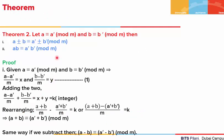Let us look at the second theorem. It states that if a is congruent to a' mod of m and b is congruent to b' mod of m, then if we add or subtract the left-hand sides, it will equal the sum or difference of the right-hand sides. So we write: a ± b is congruent to a' ± b' mod of m. The second property says if we multiply the left-hand sides, it will be congruent to the product of the right-hand sides. Let us give a general proof.